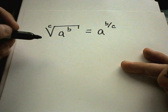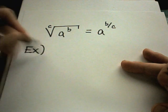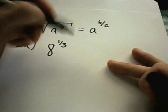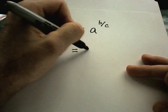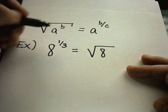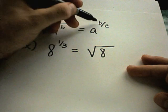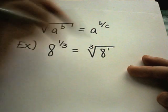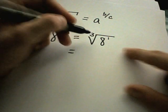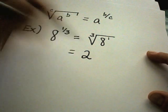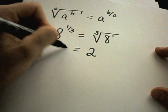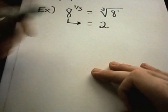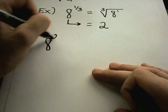Suppose someone said evaluate 8 raised to the 1/3 power. I could rewrite this as 8 underneath - the top part of the fraction goes underneath - so 8 to the 1st, with a 3 outside. It just says I'm taking the cube root of 8. From an earlier example, the cube root of 8 is 2. So 8 to the 1/3 is really a fancy way of writing the number 2.